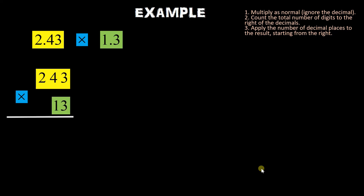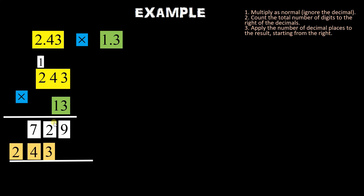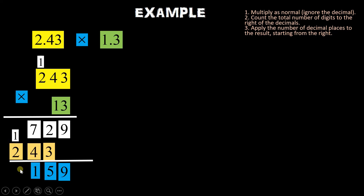Example tayo: 2.43 times 1.3. Ngayon pakita lang natin — sabi kasi doon, multiply as normal, ignore the decimal. So ignore natin yung decimal. 3 times 3 is 9, 3 times 4 is 12 — carry 1. 2 times 3 is 6 plus 1 is 7. Next: 1 times 3 is 3, 1 times 4 is 4, and 1 times 2 is 2. Then add tayo ngayon — since wala number dito, bring down natin yung 9. 2 plus 3 is 5, 7 plus 4 is 11 — carry 1. 1 plus 2 is 3.